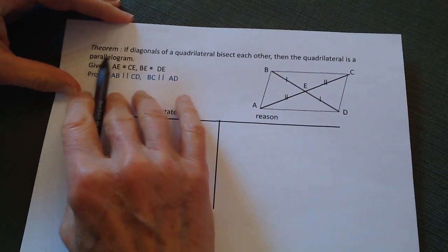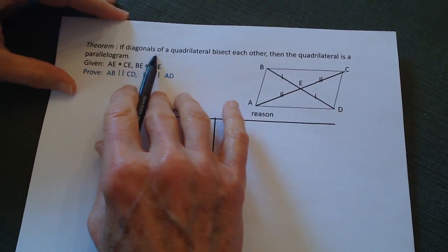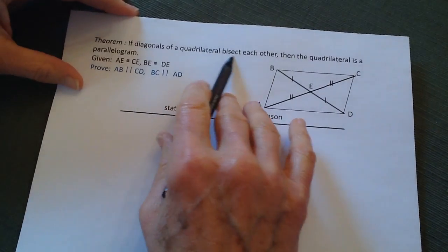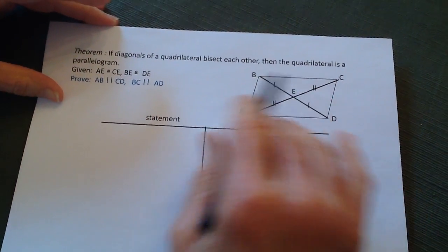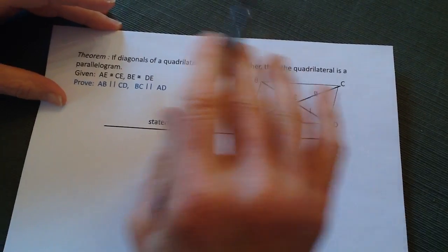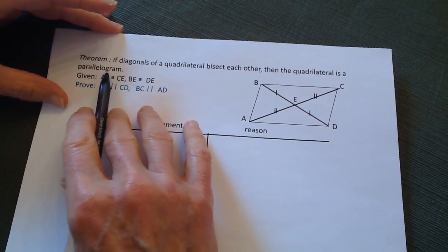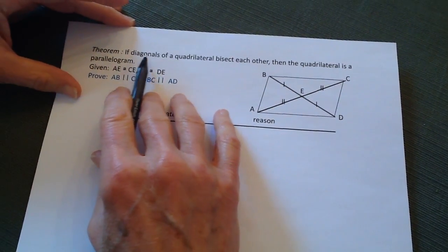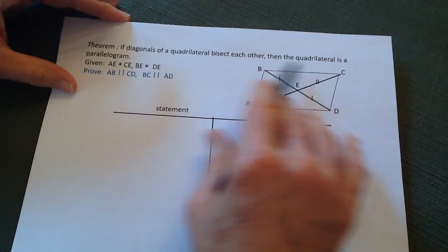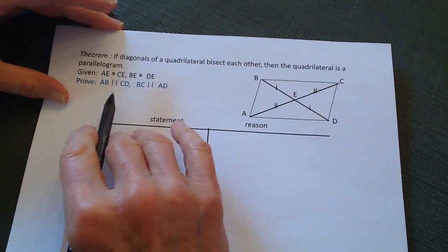Today, we're going to try to prove the theorem: if the diagonals of a quadrilateral bisect each other, then the quadrilateral is a parallelogram. This is essentially a converse of what I have done before, where if we have a parallelogram, then the diagonals bisect each other. So this is the converse, and we're going to try to prove this.